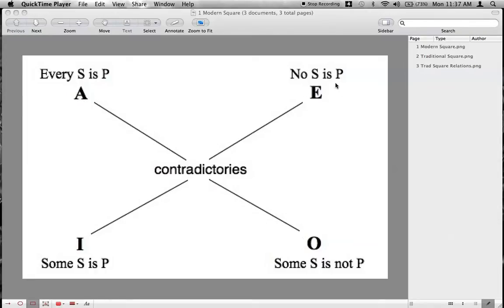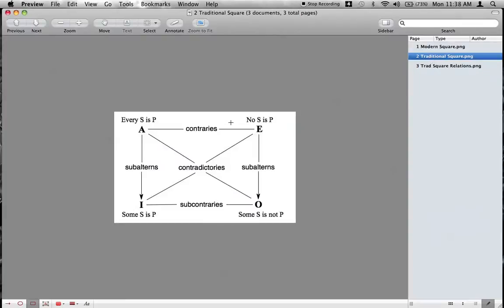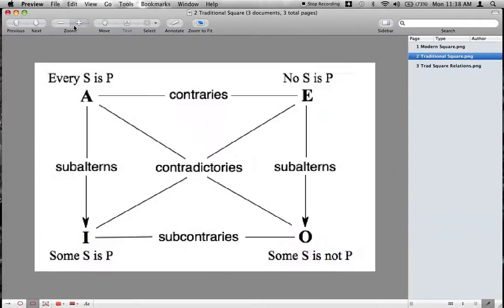Every S is P, no S is P, some S are P, and some S is not P. And in the modern square, the diagonals are understood to be contradictory. Now, in the traditional square, let me move there, you can see here the traditional square of opposition.